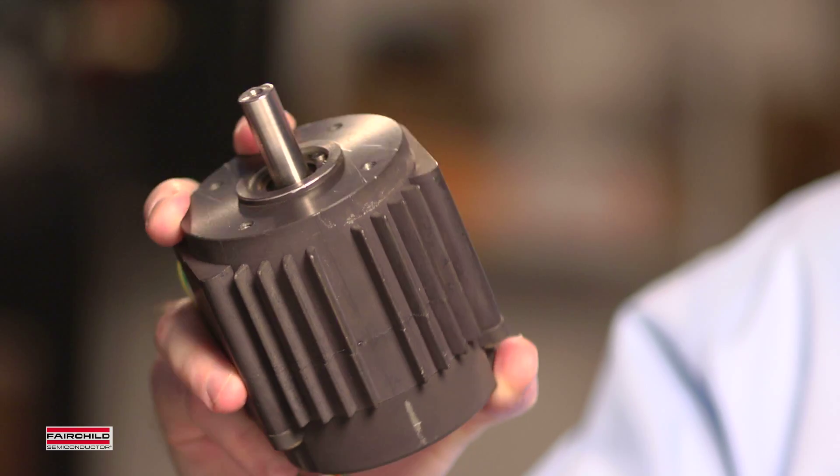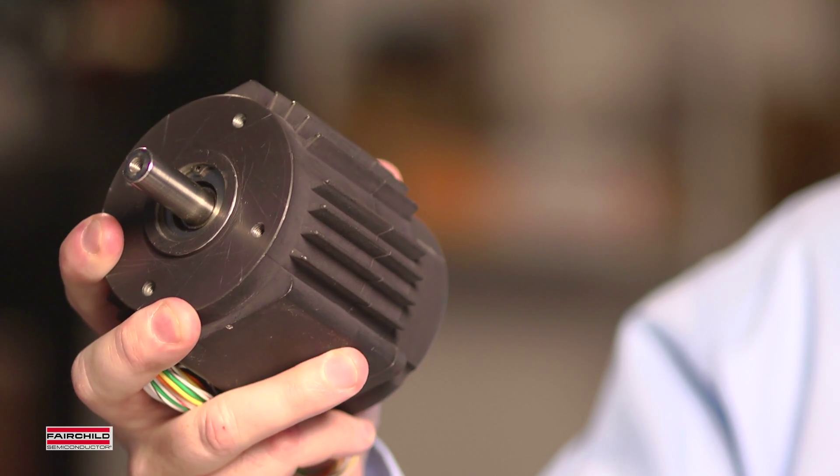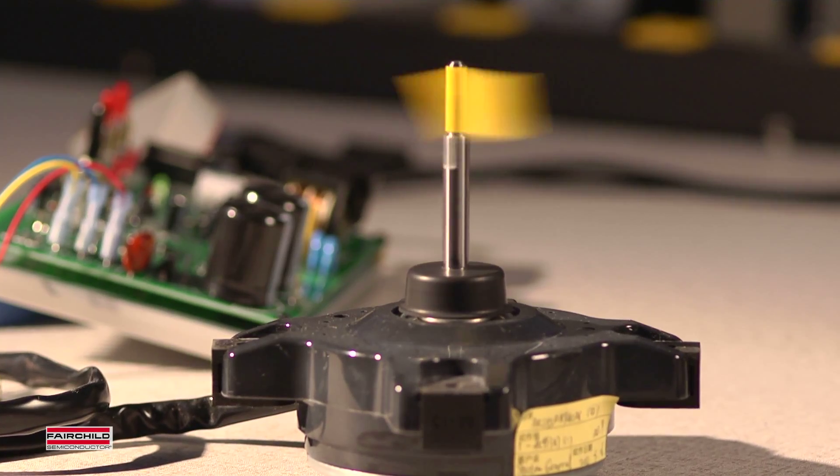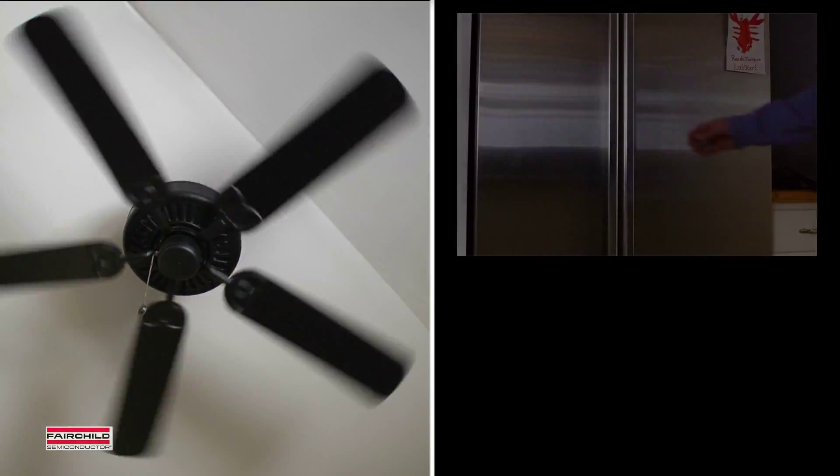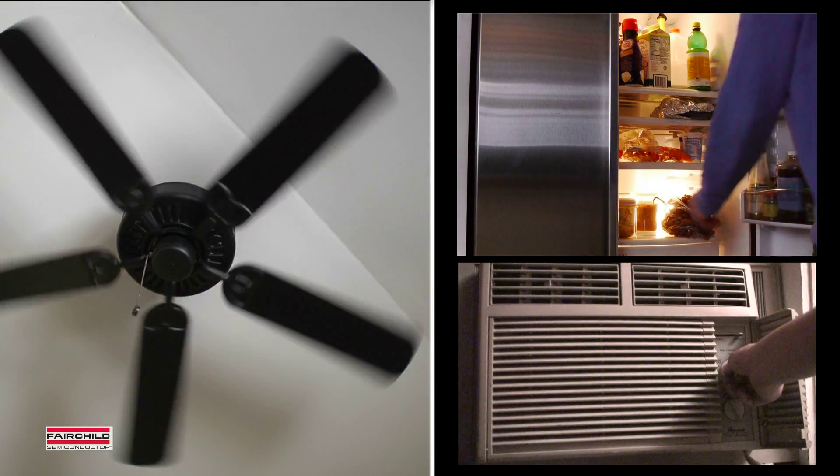The brushless DC or BLDC motor uses an electronic control to replace less reliable mechanical brushes and commutator rings for applications such as small motors in cell phones to larger motors in refrigerators and air conditioners.